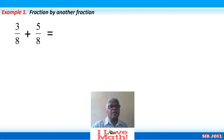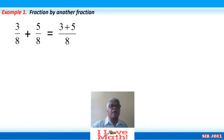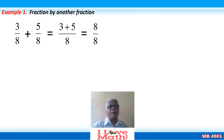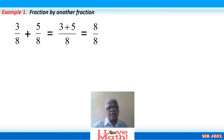Since the denominators are the same, these are similar fractions. What you are going to do is copy the denominator 8 once and add the two numerators 3 and 5. The sum of 3 and 5 is 8, so we have 8 over 8. Based on our previous video, if the numerator is equivalent to its denominator, the answer is always equivalent to 1.